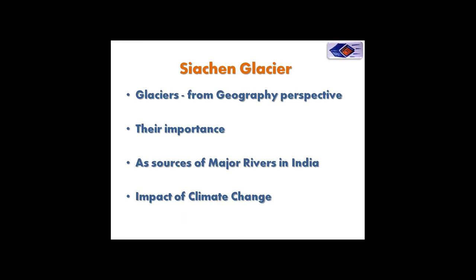Before discussing Siachen Glacier, let's study glaciers from a geography perspective — what they are, their importance, and how glaciers are a major source of rivers in India. A glacier is a river, but not of water — it is a river of ice. It is a persistent body of dense ice that is constantly moving under its own weight.